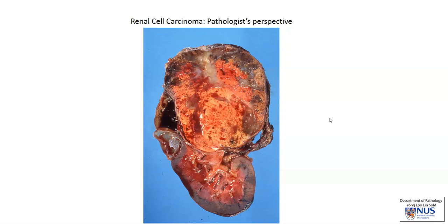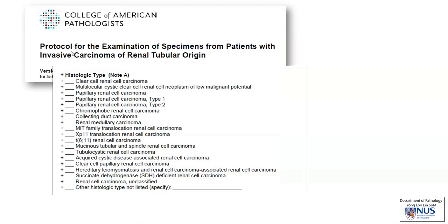Hello, I'm going to show you how a pathologist would examine a case of renal cell carcinoma microscopically to pick up prognostically important information. Here is a very well-known protocol among pathologists from the College of American Pathologists, and this really runs through all the important factors that we need to consider when we examine a case of renal cell carcinoma.